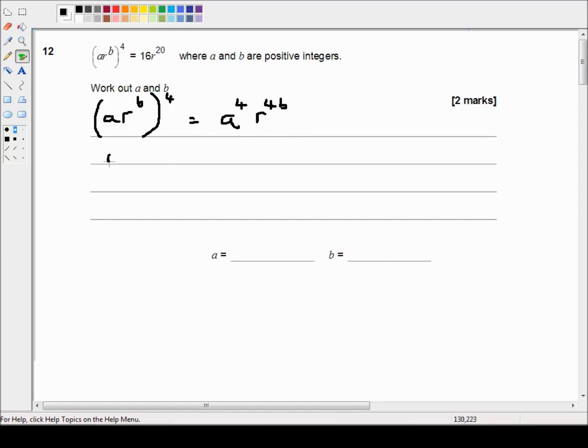So a^4 is equal to 16 because we've got a^4 r^(4b) = 16r^20.